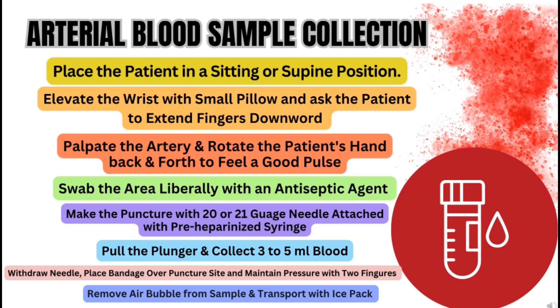After applying the antiseptic, you will puncture the identified site with a 20 or 21 gauge needle attached to a syringe. The syringe must be pre-heparinized because you have to avoid clotting of arterial blood. After collecting three to five ml of blood, carefully withdraw the needle from the artery, then apply cotton or a bandage over the puncture site and maintain pressure with two fingers for a few minutes.